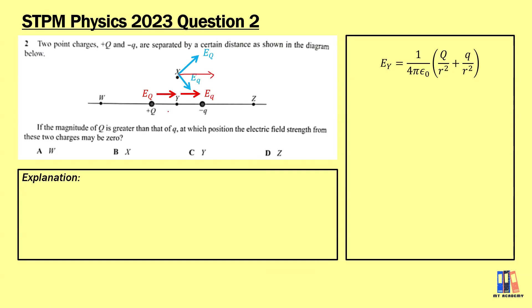For position Y, it is also straightforward. The positive Q produces a field to the right, and the negative Q field is also inward towards the negative charge — so both electric fields point to the right. The resultant at position Y is non-zero.